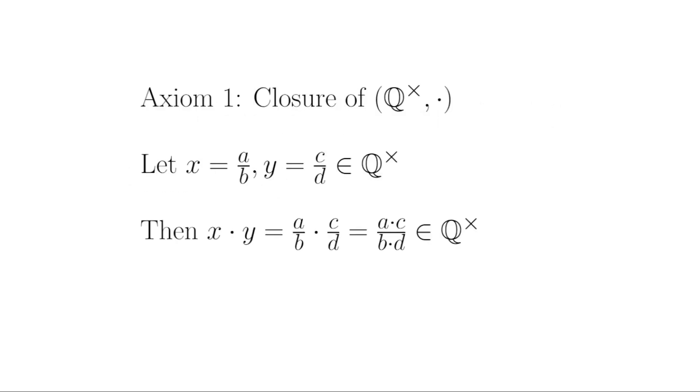To show this, let's first look at closure. Let x be a rational number a over b, and y be the rational number c over d. Then x times y is ac over bd. Now since Q× does not contain 0, I know that neither x nor y can be 0, which means that neither a or c can be 0.